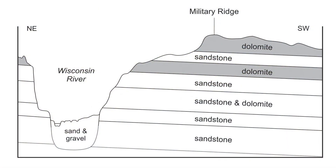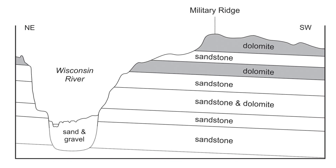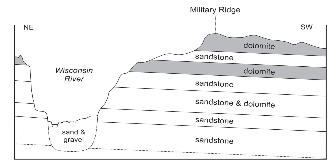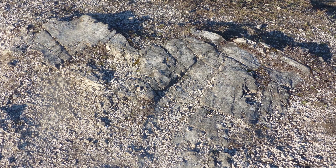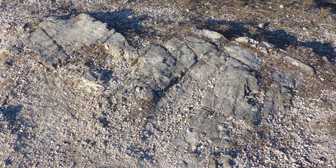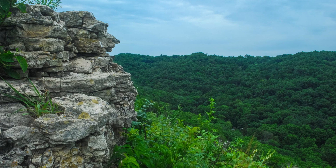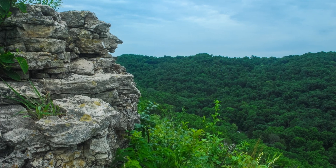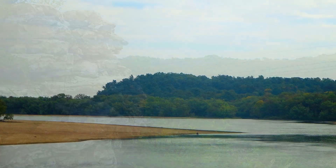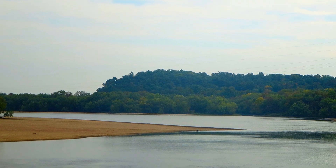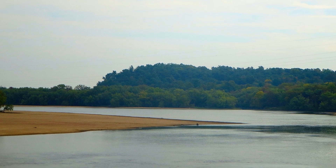Across the southern part of the state, most of the solid bedrock is made up of alternating layers of sandstone and dolomite. Dolomite is a type of limestone. These very old rocks were deposited as sediment sometime between 450 and 500 million years ago. The sandstones were deposited as river sediment, beaches, and sand dunes that once existed here.